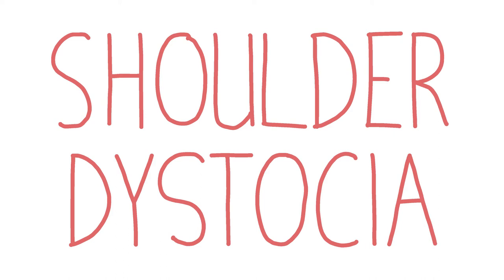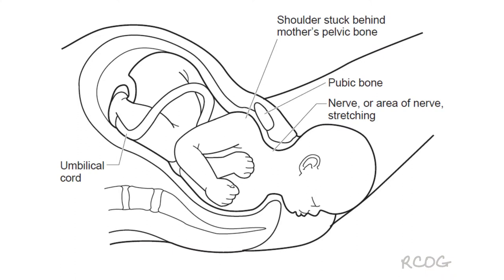Shoulder dystocia is when, after the delivery of the fetal head, the anterior fetal shoulder gets stuck behind the maternal pubic symphysis, and the posterior shoulder gets stuck on the sacral promontory. Prolonged delivery can result in hypoxia of the fetus, while traction can result in injury of the baby's brachial plexus, leading to irreversible damage and lifelong disability.